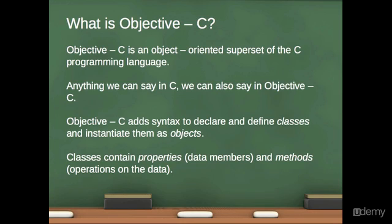Now if you don't know Objective-C, that's fine. We don't assume that you know anything at all about Objective-C. Objective-C is an object-oriented superset of the C programming language. C has existed for over 40 years. Objective-C was written as an object-oriented extension to C in the mid-80s. Anything we can say in C, because it's a superset, we can also say in Objective-C. So Objective-C has all of the primitive types that C has, including structs and unions and arrays and all that kind of stuff.